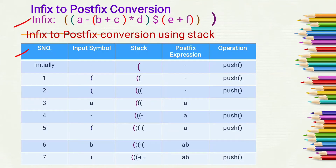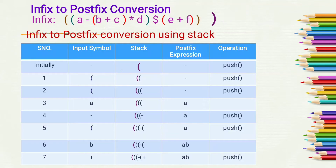We have to first draw a table containing five columns: serial number, input symbol, stack, postfix expression, and operation performed. Initially we have to push an open bracket into the stack and a closing bracket at the end of the infix expression. We scan the infix expression from left to right, taking one symbol at a time.